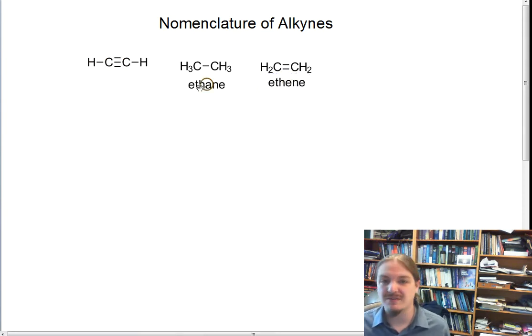So, we have ethane for an alkane, we have ethene for an alkene. And so, you might have already guessed that we would name the two-carbon alkyne ethyne. And that would be the systematic IUPAC name for ethyne.